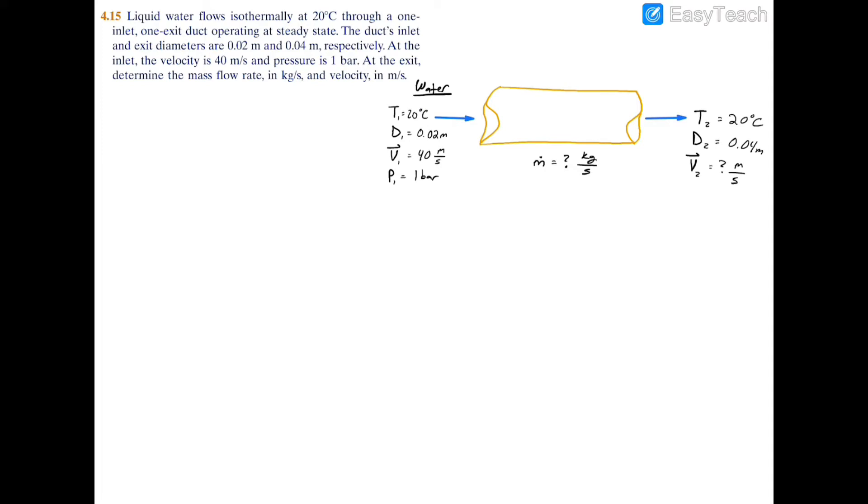First, to find the mass flow rate, I'm going to use the expression m dot equals area cross-sectional area times velocity divided by specific volume. Now we just have to find each of these variables.